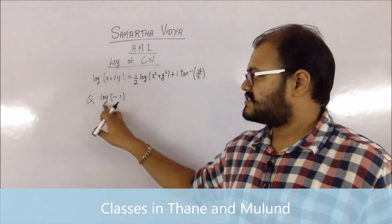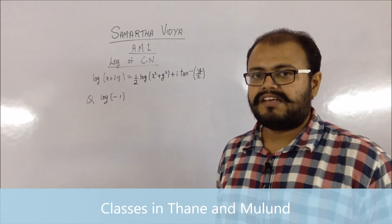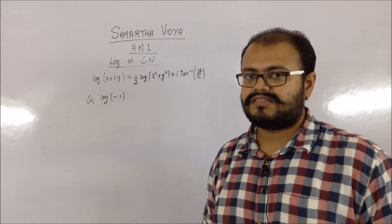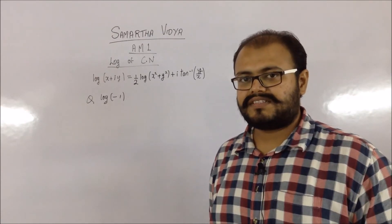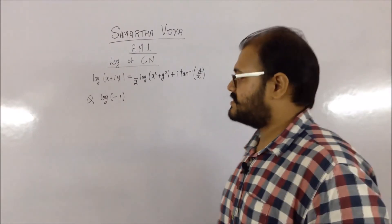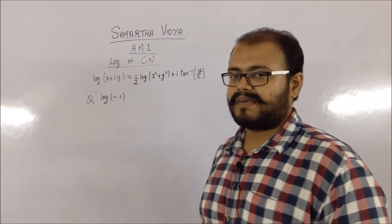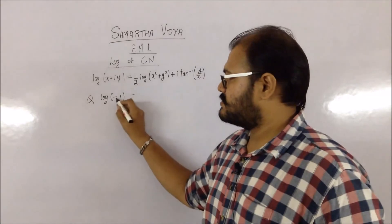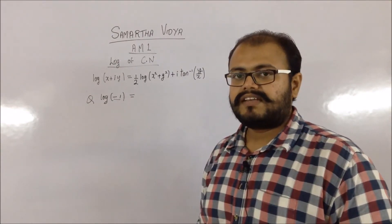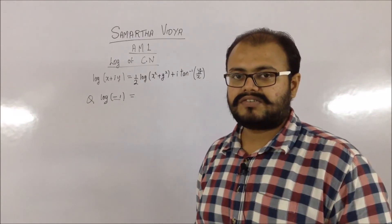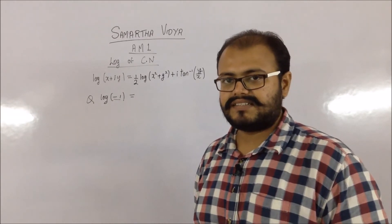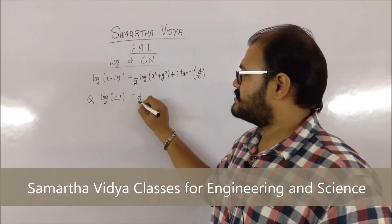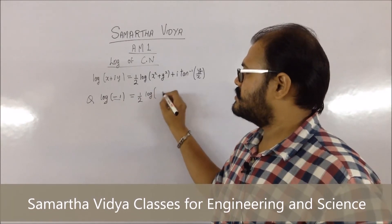Let us take the question: find log(−1). You might know that you cannot normally find the log of negative numbers, but now you will be able to. You consider −1 as a complex number. The real part is −1 and the imaginary part is 0. You can directly apply the formula: half log((−1)² + 0²) + i·tan⁻¹(0/(−1)).